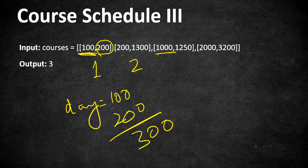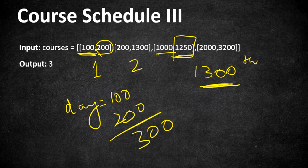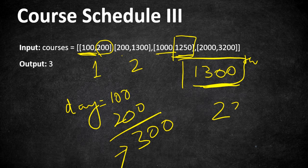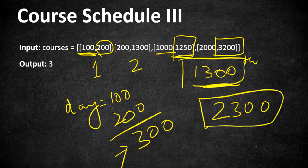On day 300 we have completed courses 1 and 2. Moving on to course 3, which has a duration of 1000 days and must be finished by day 1250. Starting on day 300, we would finish on day 1300, which exceeds the deadline, so we cannot take course 3. Moving on to course 4, with duration 2000, starting on day 300 we finish on day 2300, which is within its deadline of 3200, so we can take course 4.